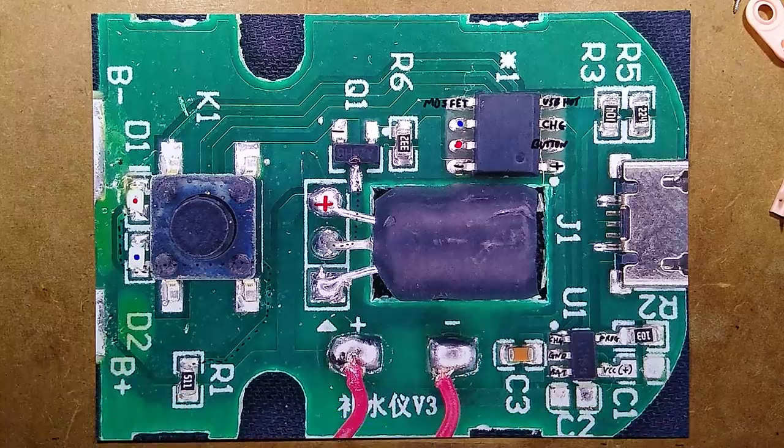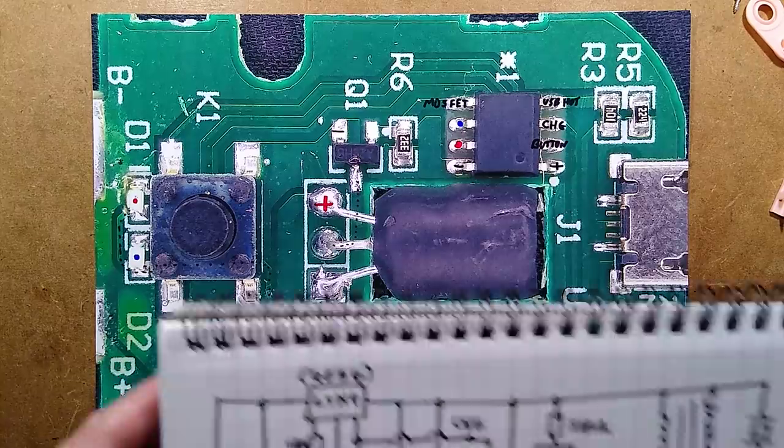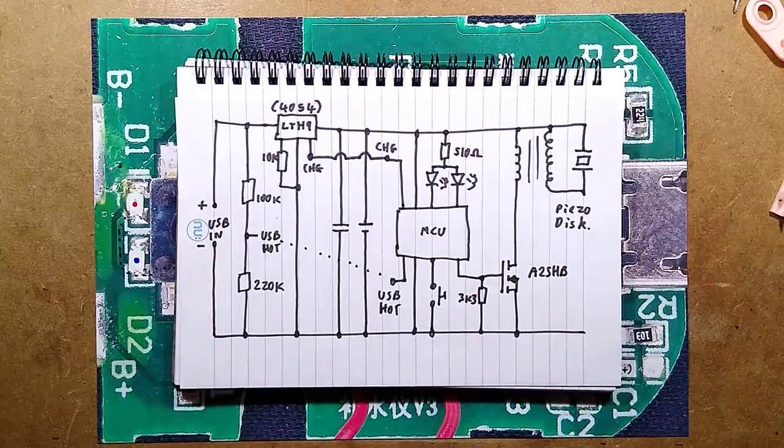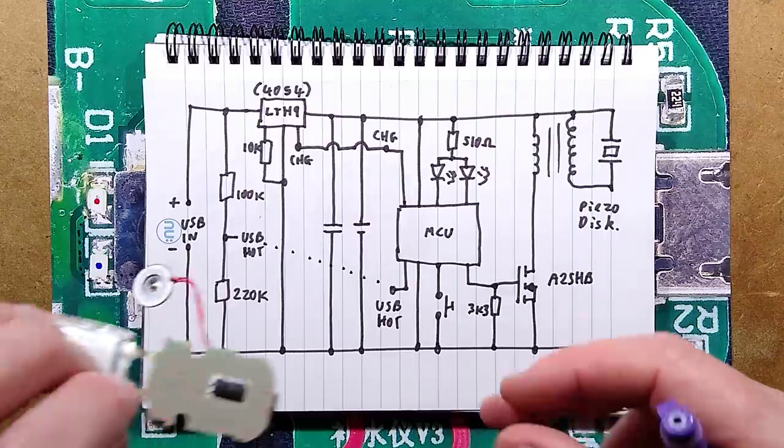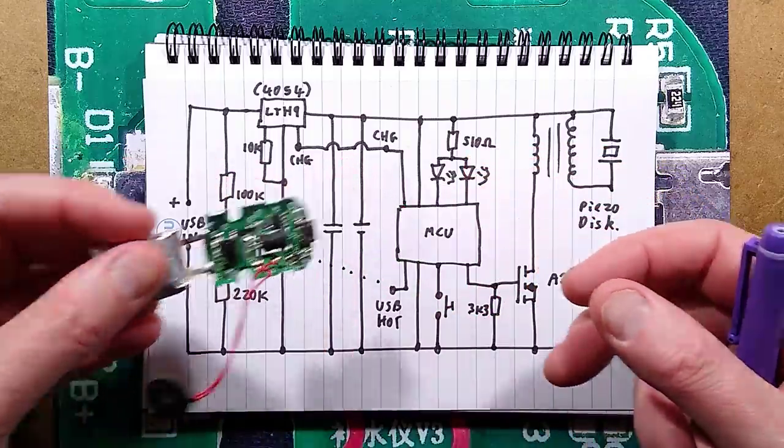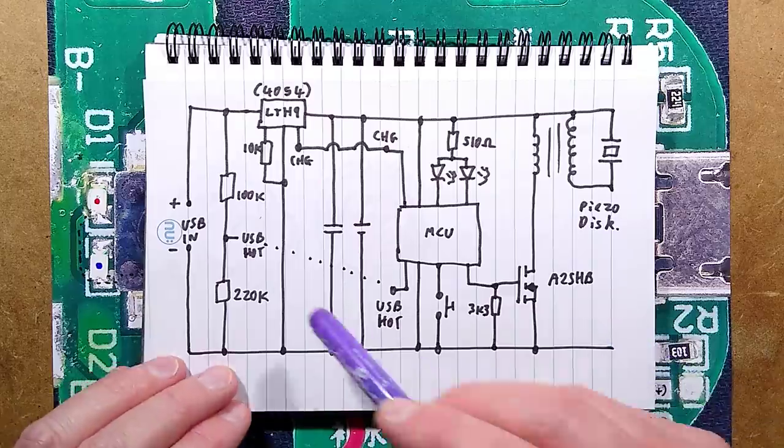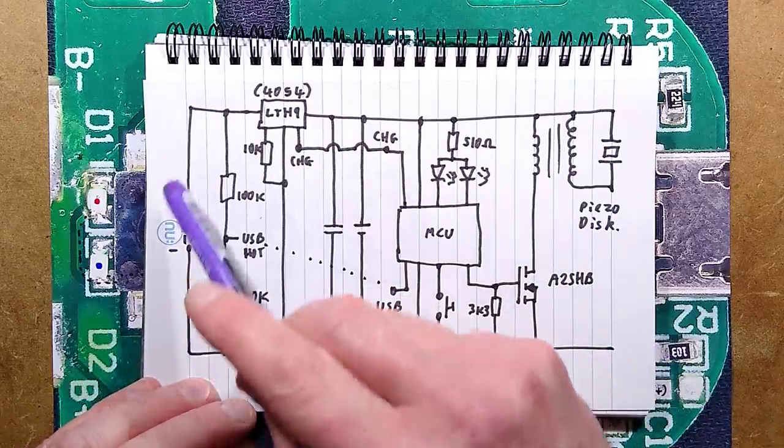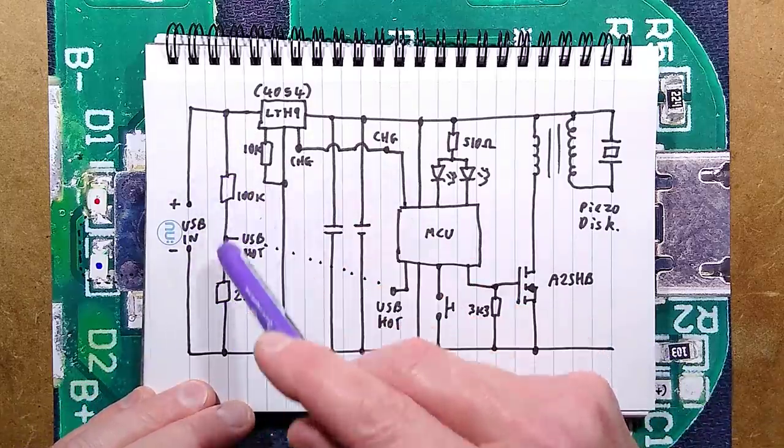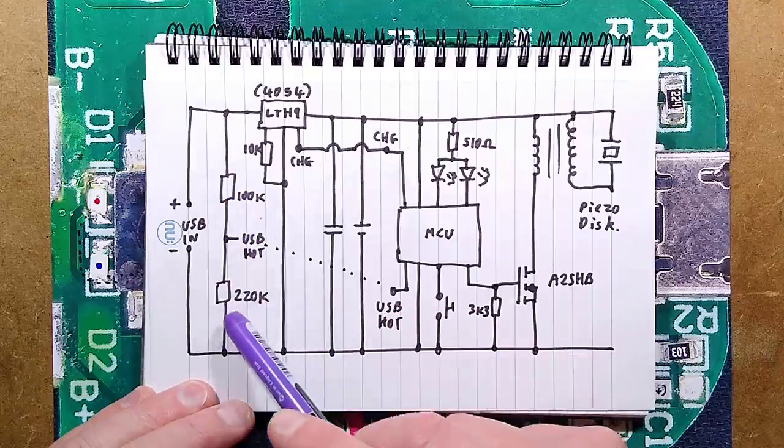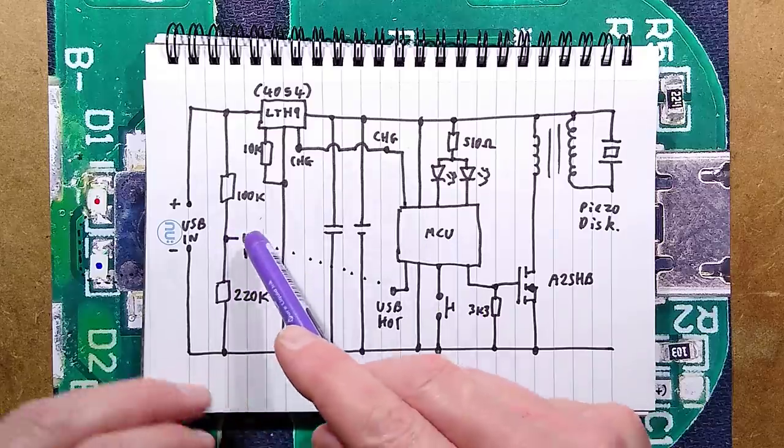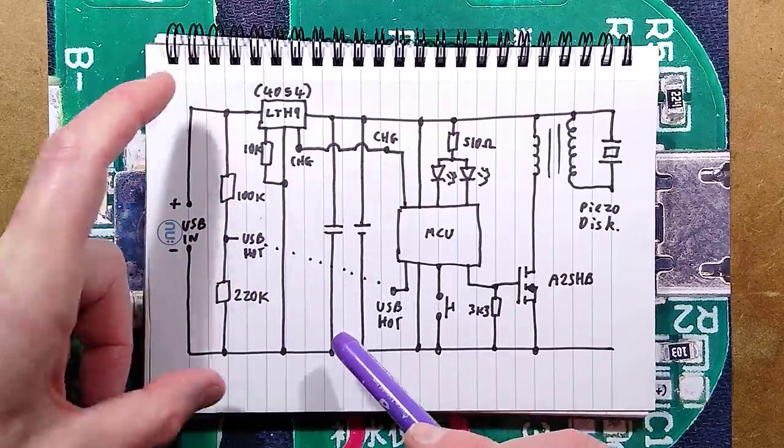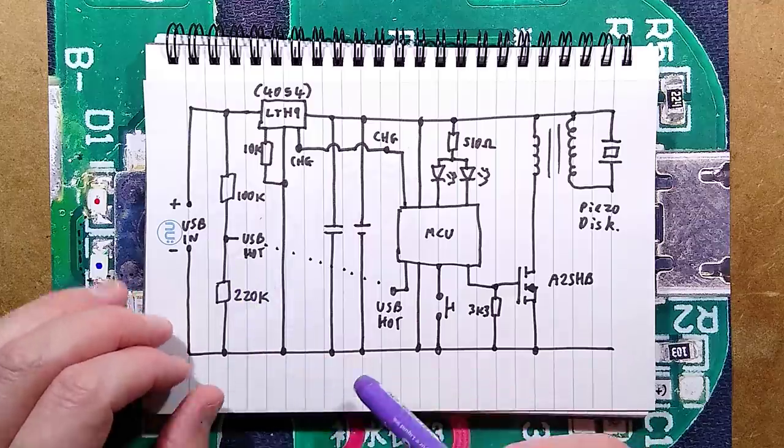If I bring in the schematic and we zoom down on this. Single-sided board, by the way. Very, very clean board in that sense. So, we've got the USB coming in. The first thing it hits is this resistive divider with a 100k resistor and a 220k resistor and then the midpoint of that goes to the microcontroller just to tell it when there is an ongoing USB supply. I've called it USB hot.